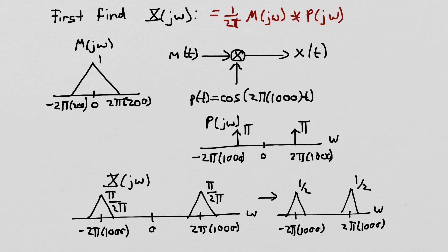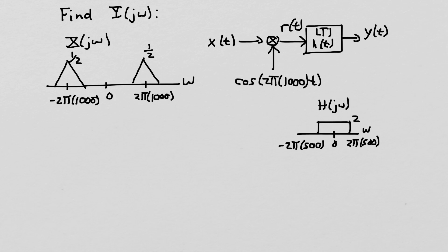Now let's solve further into the system to find y of j omega. x of t propagates through the channel to the receiver, where we multiply by the cosine again to get r of t, then process it with the LTI system to get y of t. So let's calculate r of j omega. r of t is the multiplication of x of t with the cosine, so r of j omega will be the convolution of x of j omega with the transform of the cosine. Why don't you pause the video and try to solve for y of j omega yourself.